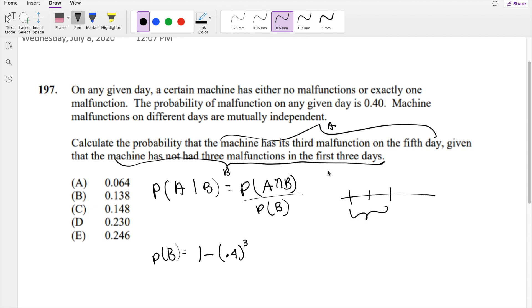because they're saying what is the probability that on the first three days it has not had three malfunctions, so it maybe had zero malfunctions, maybe one malfunction, maybe two malfunctions, right? And then this part's saying, calculate the probability the machine had its third malfunction on the fifth day. So on the fourth and fifth day, it had maybe like